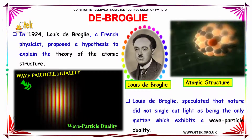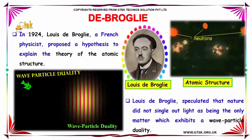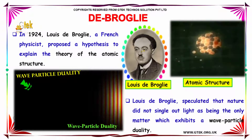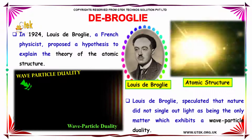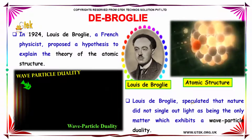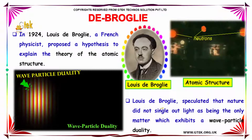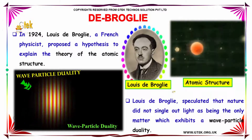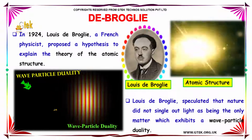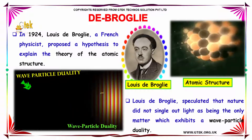In 1924, Louis de Broglie, a French physicist, proposed a hypothesis to explain the theory of atomic structure. Louis de Broglie speculated that nature did not single out light as being the only matter which exhibits wave-particle duality.